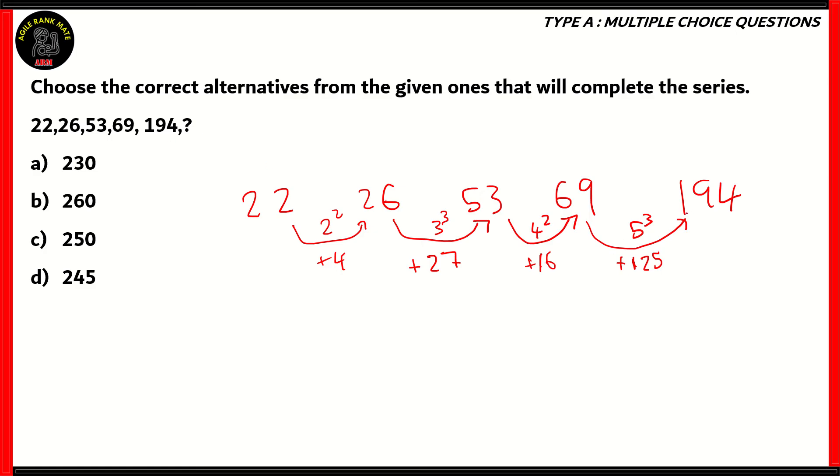The next number is 194 plus the square of 6. So there will be a difference of 6 squared between 194 and the next number. So we just add 6 squared to 194 in order to get our answer.